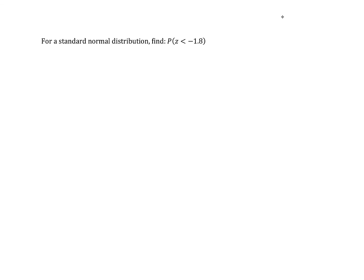For a standard normal distribution, find the probability that z is less than negative 1.8.